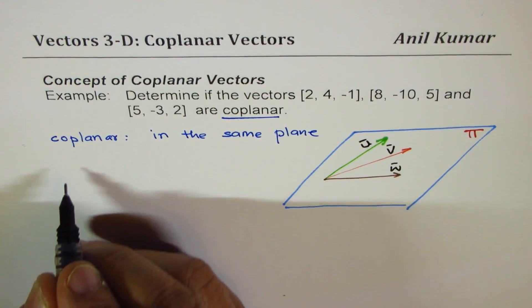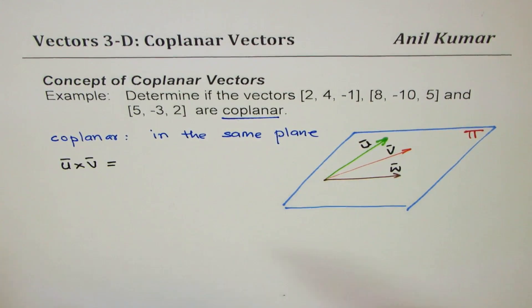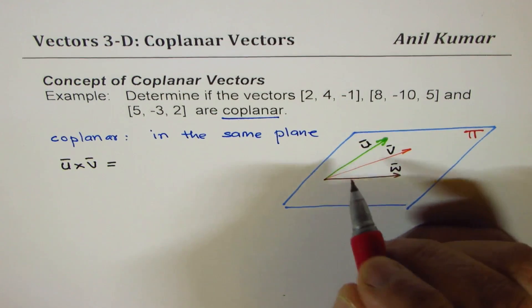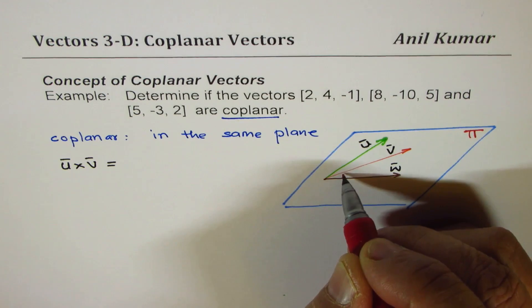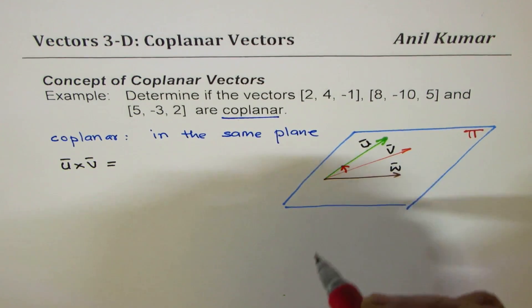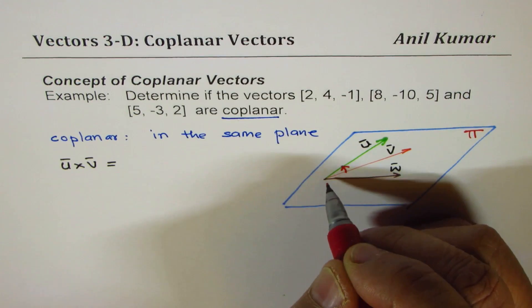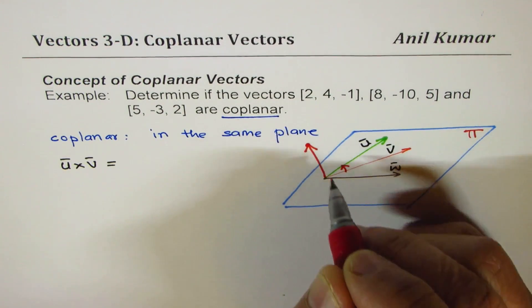Now, see what happens when I do cross product of these vectors. Let's call them by the name u, v, and w. Let's say these are the three vectors. Now, if I do u cross v, I will get a vector which is perpendicular to both of them.